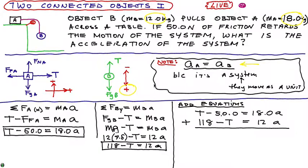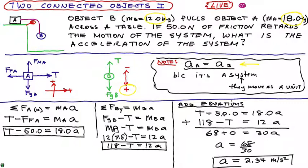So when you add up the numbers on the left side of the equation, 118 minus 50, you're going to get 68. And what's T minus T? Just 0. So I'll put that in, plus 0, is equal to 18 plus 12. That's 30. A. So A will be equal to 68 divided by 30, or A is equal to 2.37 meters per second squared. And that's our answer.